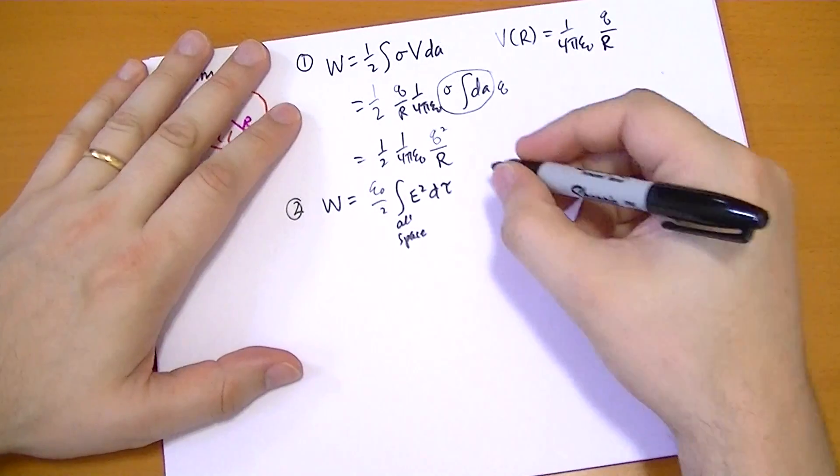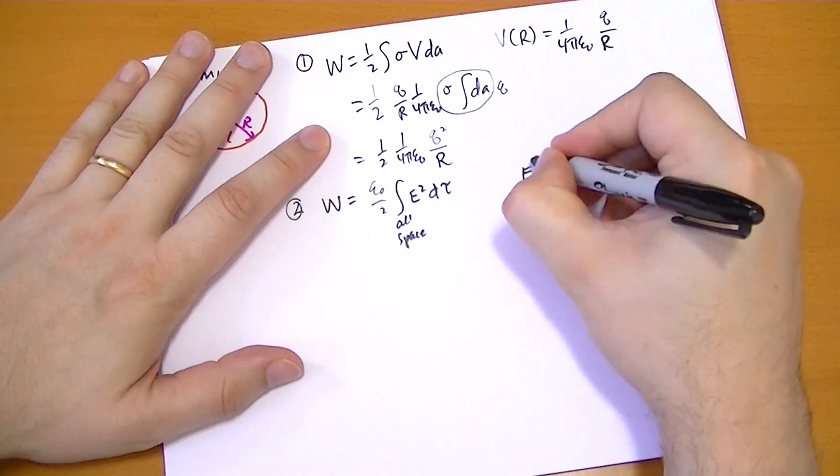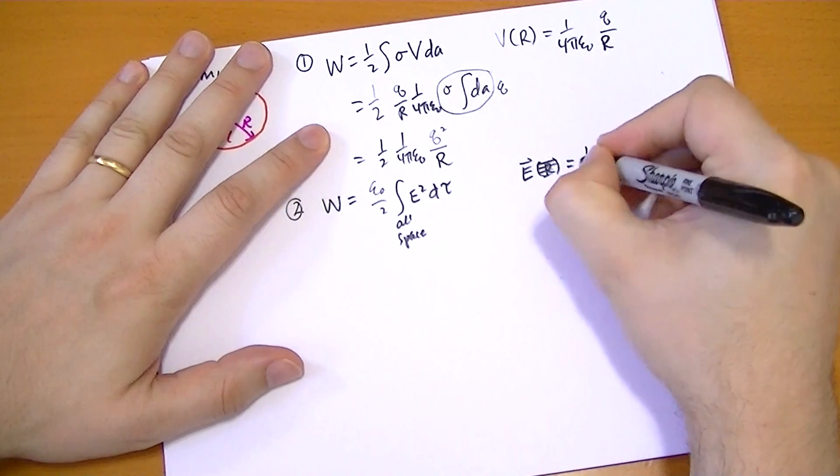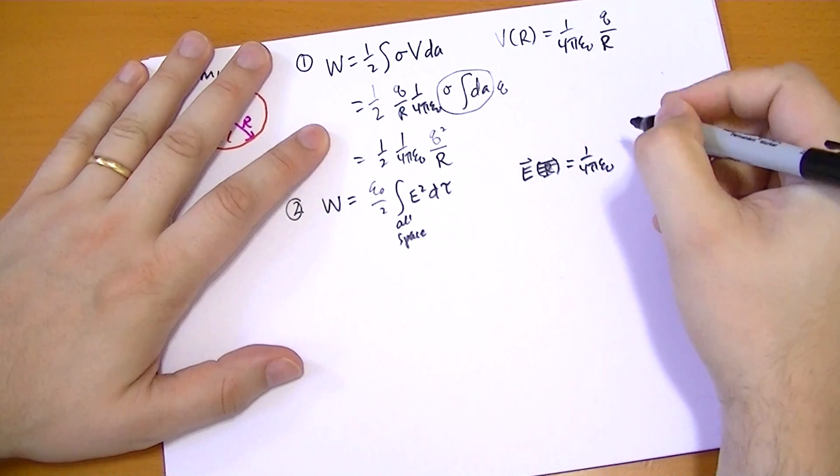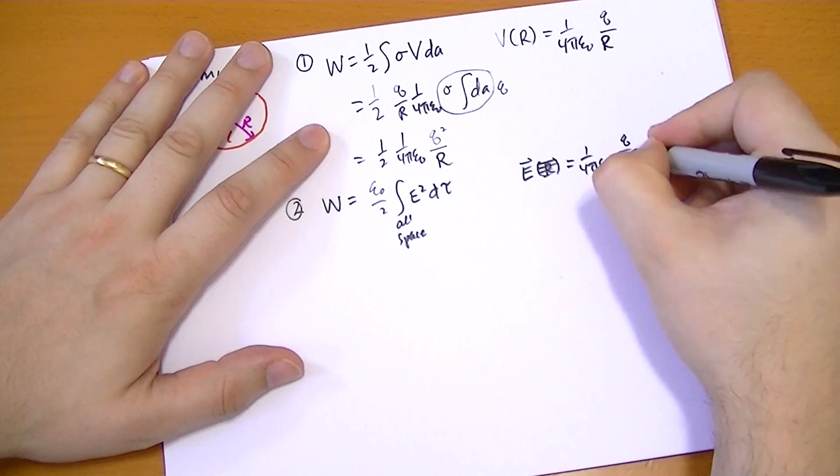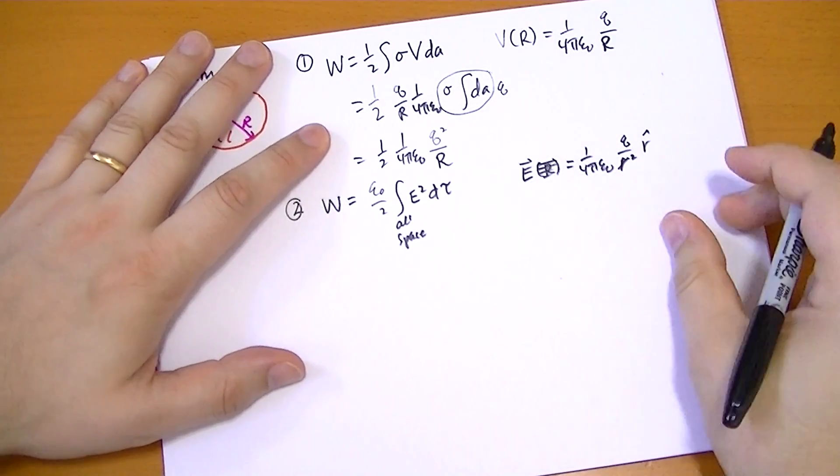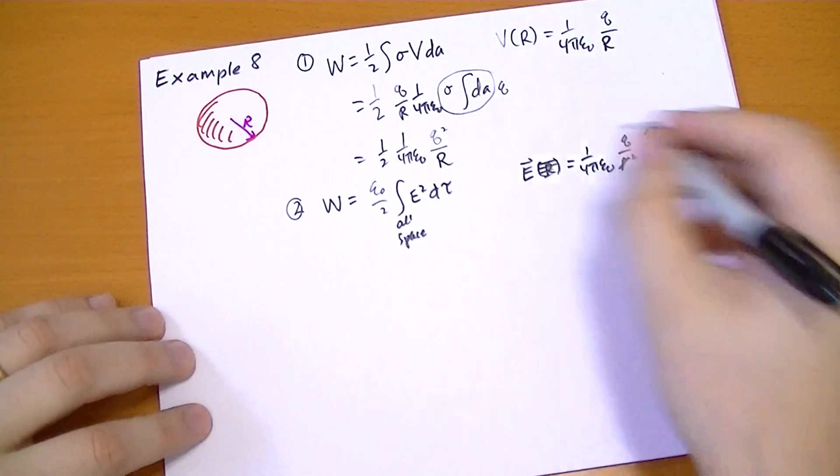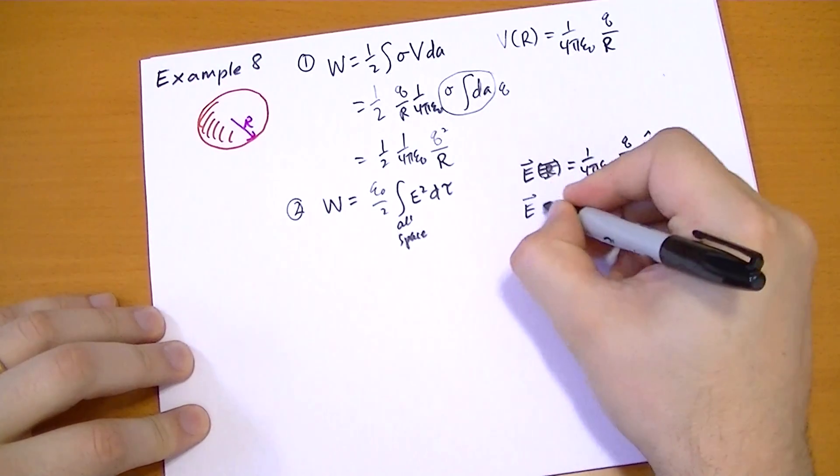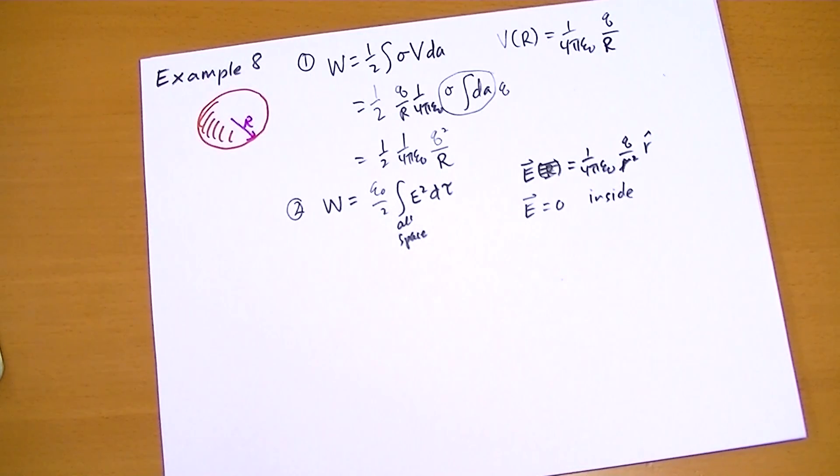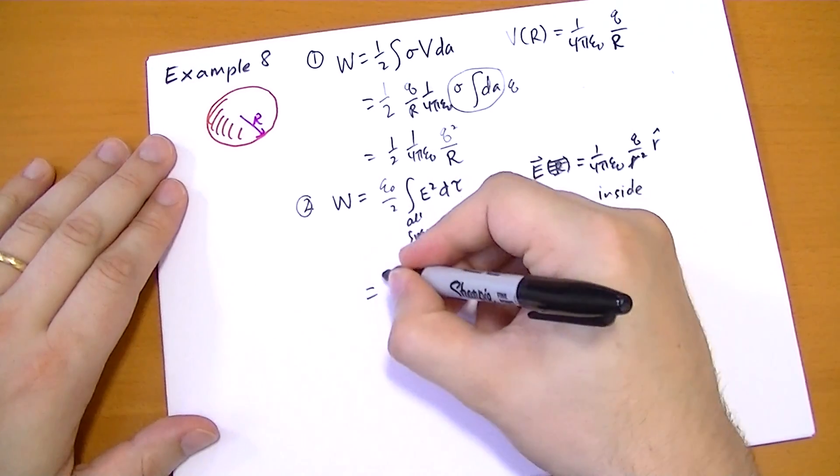So what do we do here? What's the electric field? The electric field at R, we're going to do all space. So this is 1 over 4 pi epsilon naught of Q over R squared R hat. And inside the sphere is 0 inside. So we don't have to worry about that.